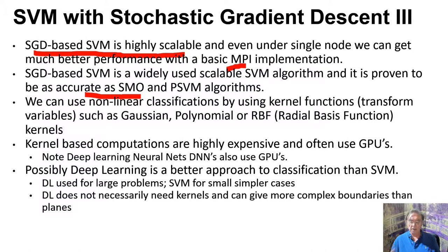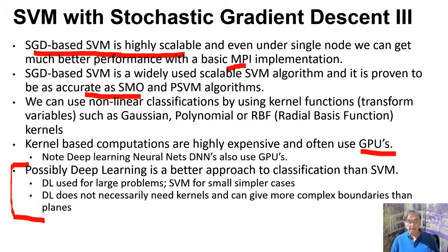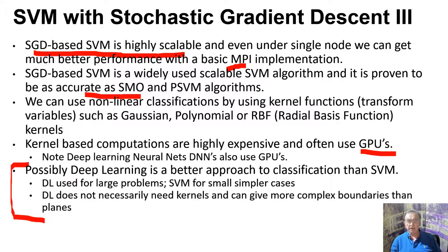We can also use nonlinear classifications with SVM by applying a kernel function to the points, and sometimes GPUs can calculate those functions. However, SVM is not used as much as it used to be, because deep learning is now a much more powerful classification method for large problems. SVM is essentially just drawing lines, and if points aren't separated by lines but by a more complicated curve, you have to guess the kernel — that's not systematic. A huge advantage of deep learning is it does this in a systematic fashion where you don't have to guess the kernel. That's the end of SVM — an important but mature algorithm.